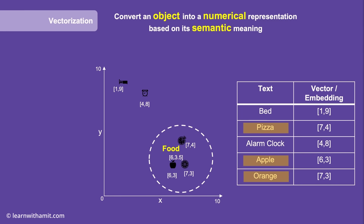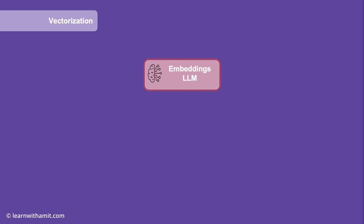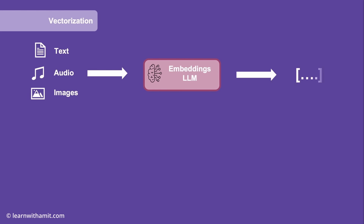This is exactly how vectorization works. In this example we used a floor map to position items into a coordinate system. For generative AI, we have special LLMs that are trained to build a very large coordinate system based on the semantic meaning of words, sentences, or even images. These LLMs are called embedding LLMs. You can think of embedding LLMs similar to our floor map — they have a coordinate system and can place items in it based on their meaning. These LLMs can take text, audio, or images as input, place them in their large coordinate system, and then generate their coordinates, which are the vector representation for those objects.